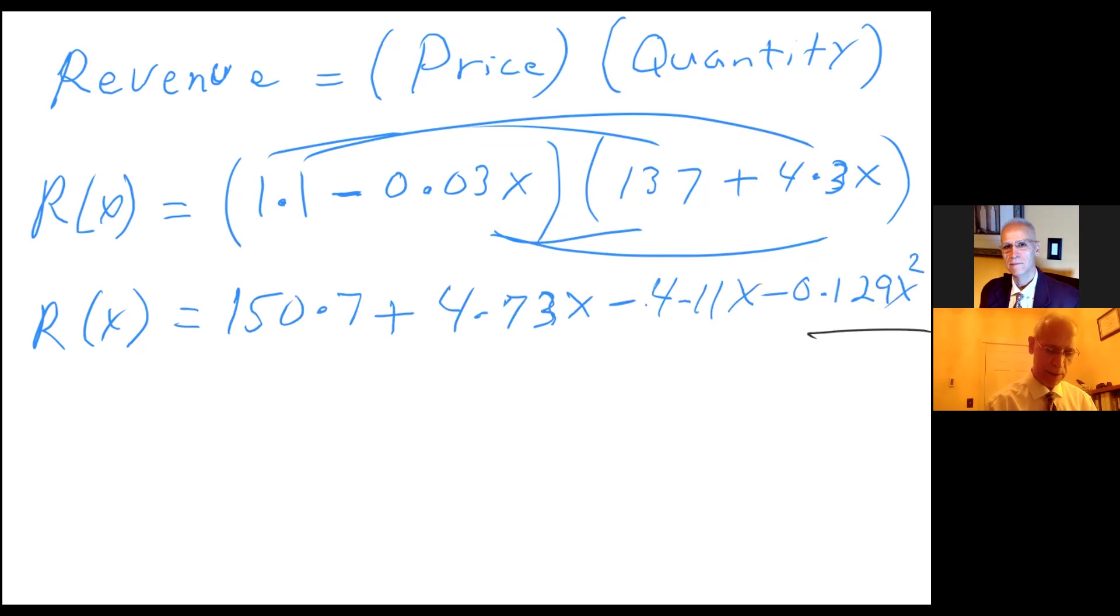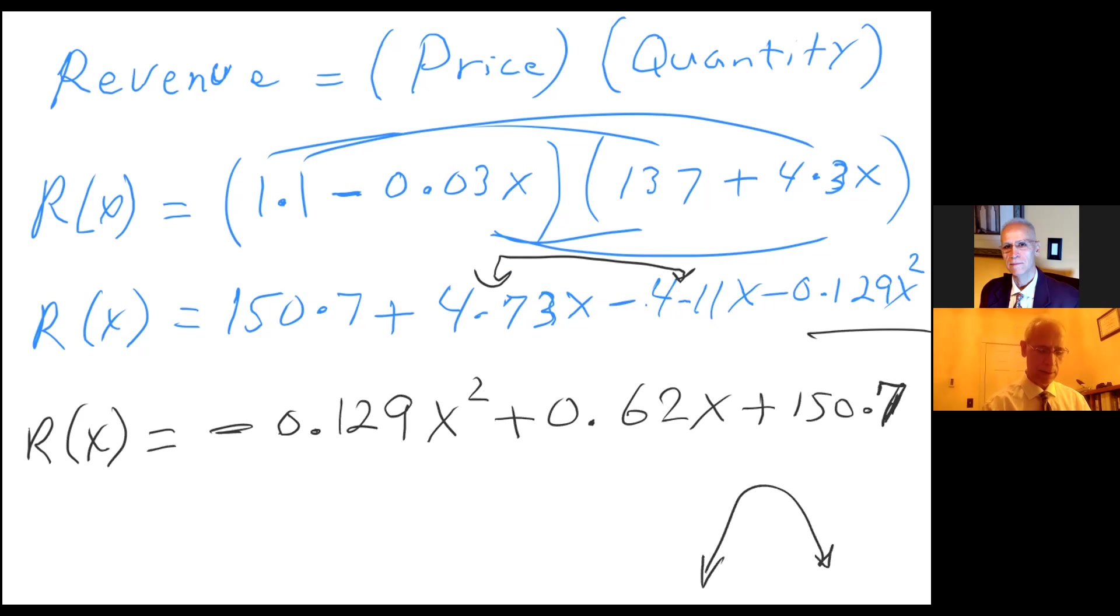And we know that these two are like terms so we can combine them. So R(x) = -0.129x² + 0.62x + 150.7. Notice that I have a quadratic where the coefficient of x² is negative. It's an upside down parabola, so the vertex points to the maximum.